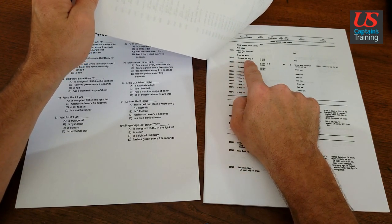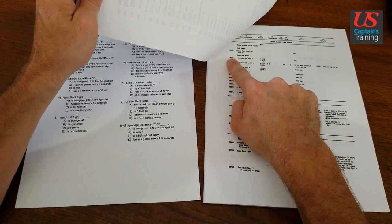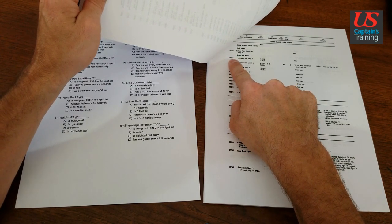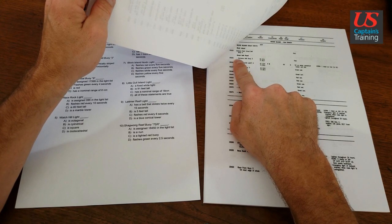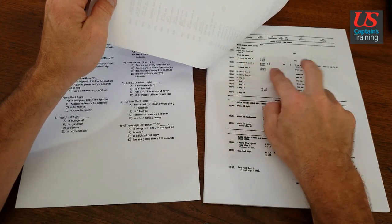Entrance Bell Bowie 2, so it says Great Salt Pond, 18,325 like we found from the index, Entrance Bell Bowie 2, it gives coordinates and that it's red.